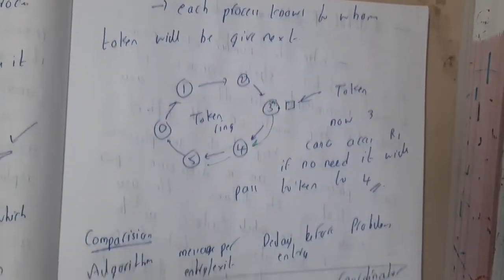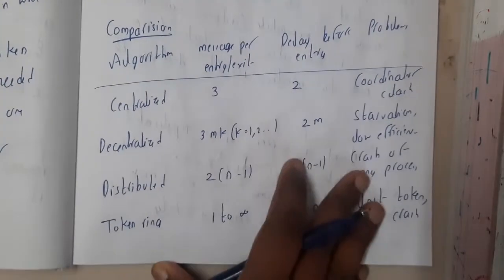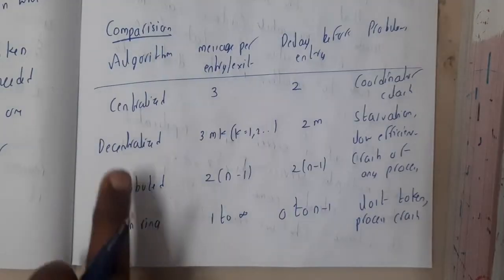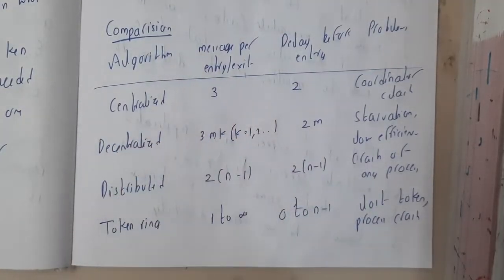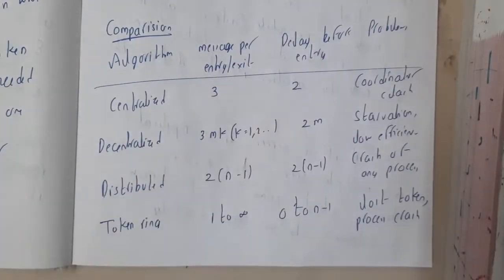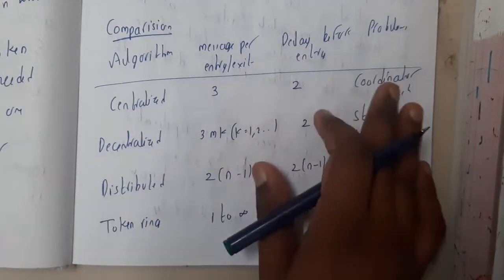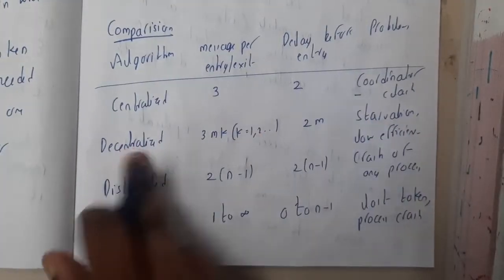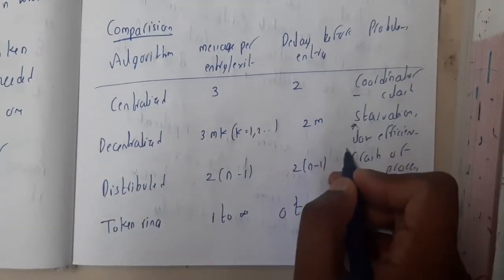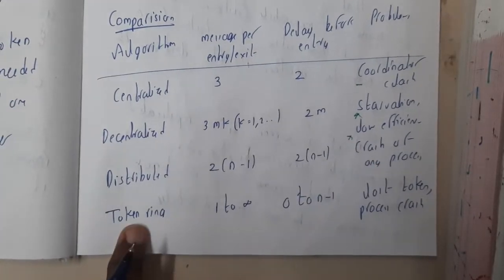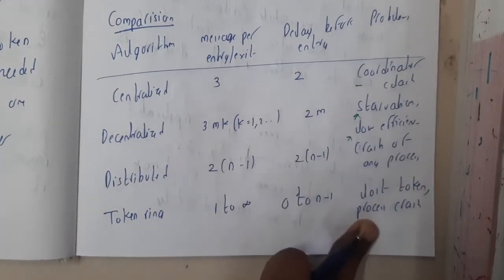If you write a small table for comparison, in centralized we are using three different messages. The problems are: in centralized, if coordinator crashes; in decentralized, there is a chance of starvation and low efficiency; in distributed, crash of any process; and in token ring, loss of token or process crash. In these situations we will be having a problem.